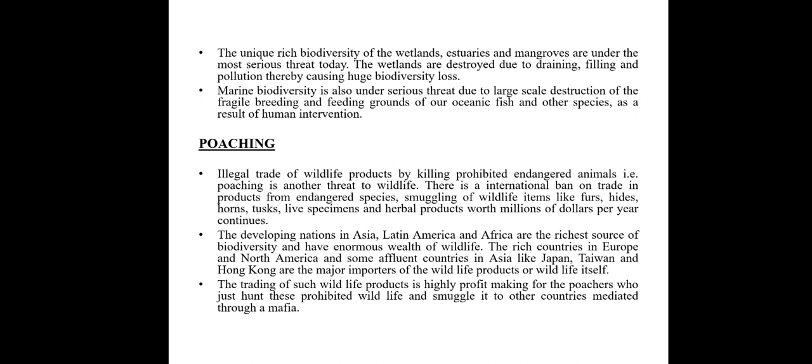Developing nations in Asia, Latin America, and Africa are the richest sources of biodiversity. Because of this biodiversity, illegal trading and smuggling take place. The trading of such wildlife products is highly profitable for poachers, who hunt these prohibited wildlife and smuggle them to other countries, mediated through a mafia.